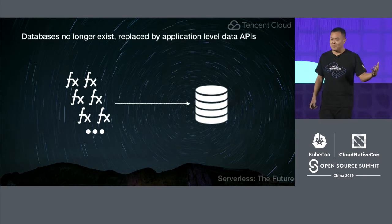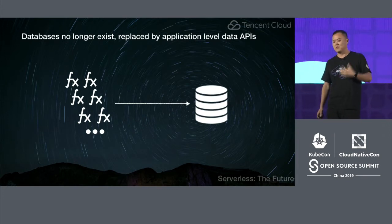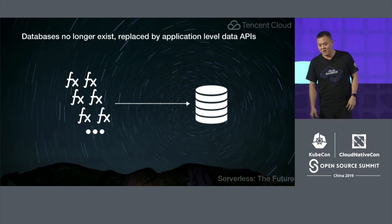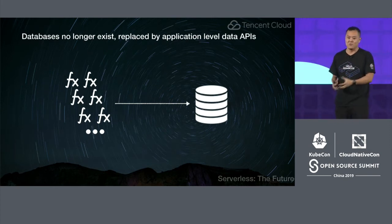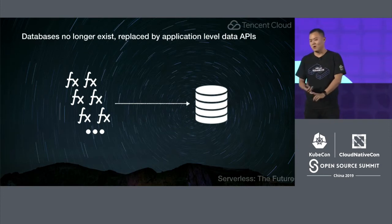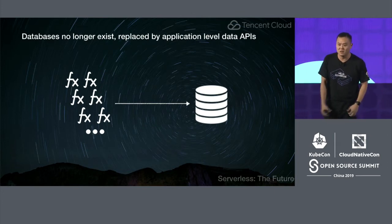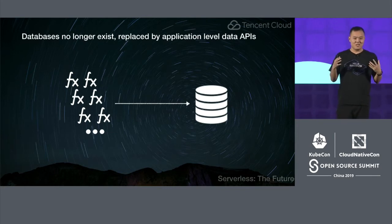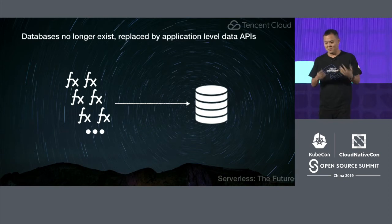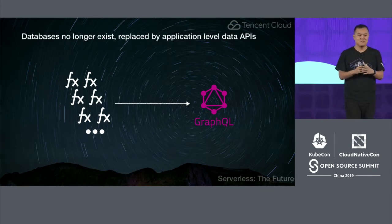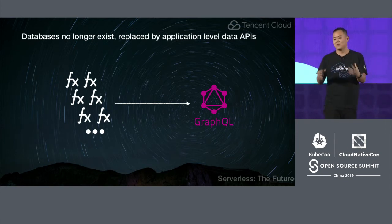The second thing is that we think databases will no longer exist — they're going to be replaced by application-level data APIs. One of the biggest problems with serverless today is that I've got execution via my function as a service, but I need to access data. Even with serverless DB offerings, I have to do it through NoSQL or SQL databases, and I typically have to manage connections or manage physical resources. Nobody wants to write SQL statements on top of serverless — you want to be able to model your application and your data in a much more natural way. GraphQL is one of these technologies that's a first step into managing data at an application level, and we'll see a lot more growth in that area.